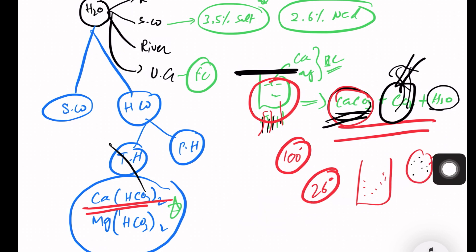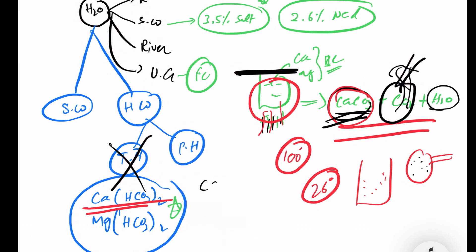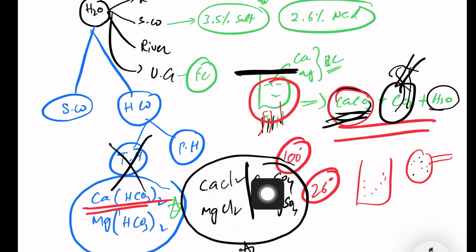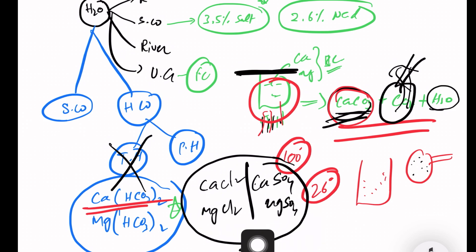If you want to remove temporary hardness, boiling works. But permanent hardness is different — it involves calcium and magnesium in sulfate and chloride forms, not bicarbonate. We have CaCl2 and MgCl2, and also CaSO4 and MgSO4. Calcium magnesium bicarbonate form is temporary hardness; sulfate and chloride forms are permanent hardness. Permanent hardness cannot be removed by simple boiling — a different process is needed.